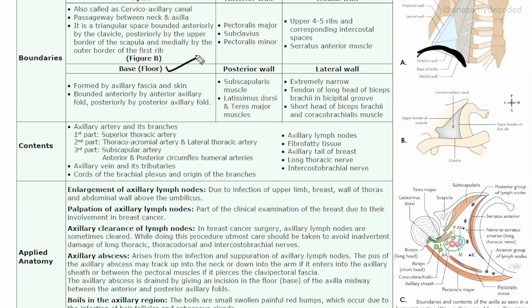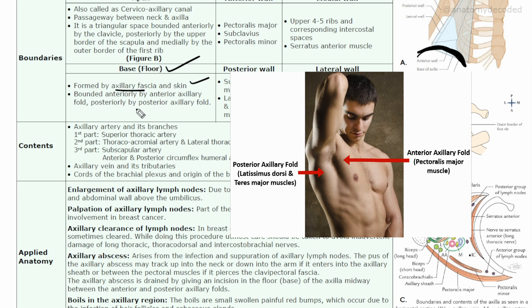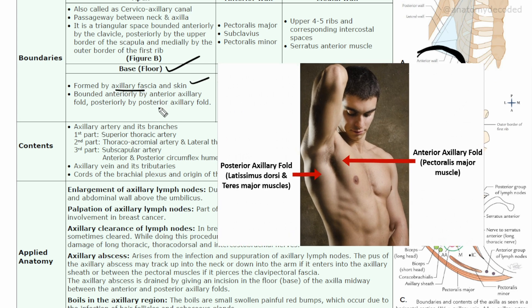The base of the axilla, also referred to as the floor, is formed by the axillary fascia and the skin. It is bounded anteriorly and posteriorly by folds referred to as the anterior axillary fold and the posterior axillary fold.